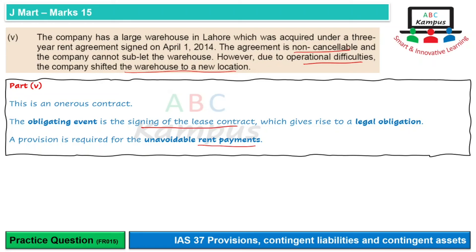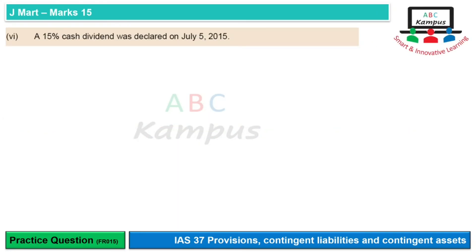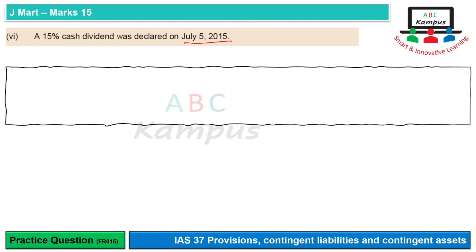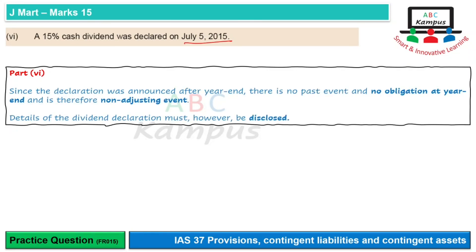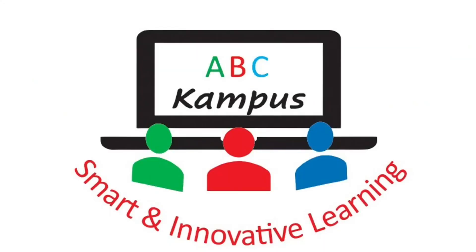Sixth point: 15% cash dividend was declared on July 5, 2015 — yaani year end ke 5 days baad. IAS-10 mein clearly mention hai ki agar dividend declare hota hai after year end, toh wo non-adjusting event consider hoga — year end par uski koi obligation nahi hoti aur hum usko recognize nahi karenge. However, dividend obviously ek important information hoti hai for shareholders and users of financial statements, isliye financial statements mein disclose kiya jayega aur IAS-1 ke relevant disclosures diye jayenge. So no obligation at year end — it's a non-adjusting event but IAS-1 ke mutabiq disclosures dene hain. Is question ke 6 parts the aur unko one by one discuss kiya — that's all for today, have a good day.